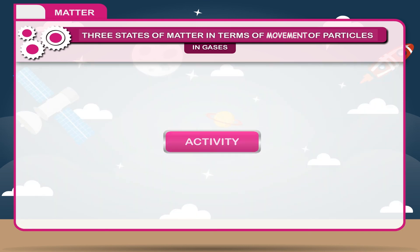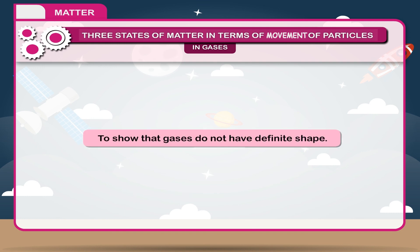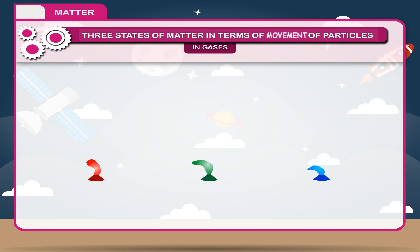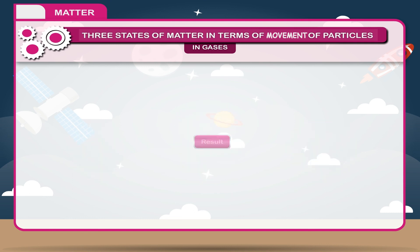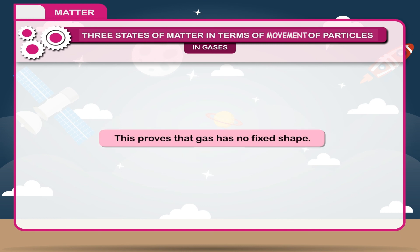Activity: To show that gases do not have definite shape. Take three balloons of different shapes and inflate with air. The gas inside the balloon takes the shape of the balloon. Result: this proves that gas has no fixed shape.